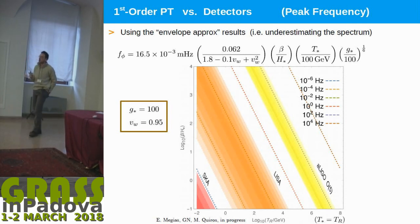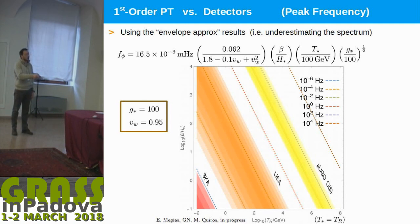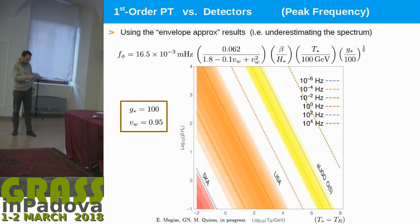What is the typical frequency of the peak of the spectrum? Depending on beta — the parameter connected to how fast the potential goes down with temperature — and the temperature at which the phase transition occurs, the peak has different frequencies. For a temperature of 10 MeV, you are in the region of SKA. For a typical temperature of 100 GeV (electroweak scale), you are in the region of LISA. At higher temperature, around 10 to the 6 or 10 to the 4, you are in the region of LIGO.